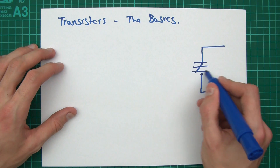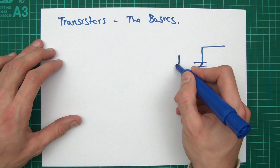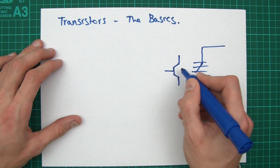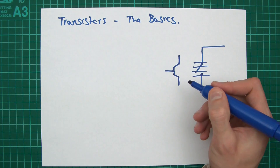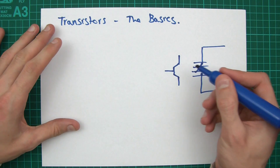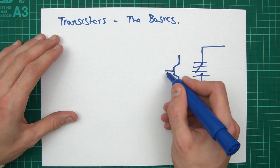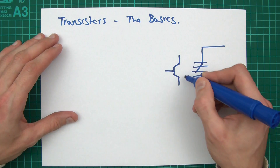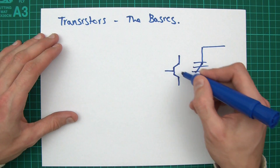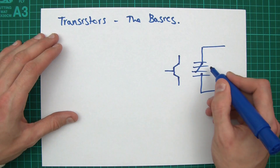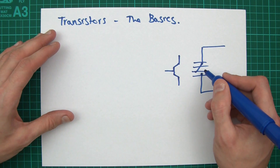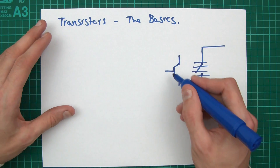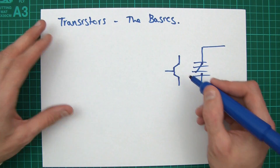That's where transistors come in handy. If we remove the switch and replace it with a transistor — this is the symbol for a transistor — you can control the amount of current or voltage over here and thereby manipulate the switch. That's what you can use transistors for: as a switch.